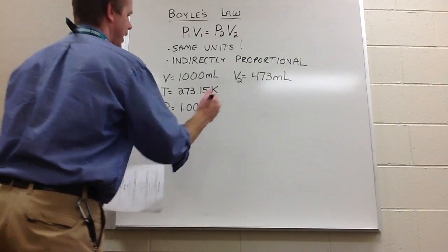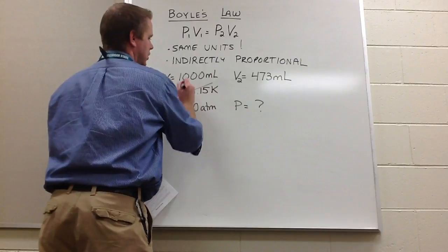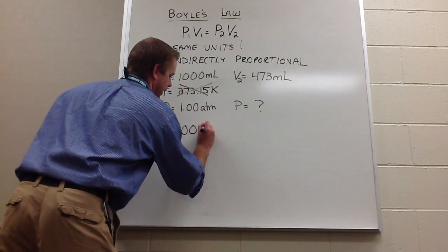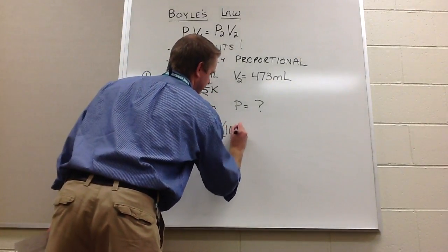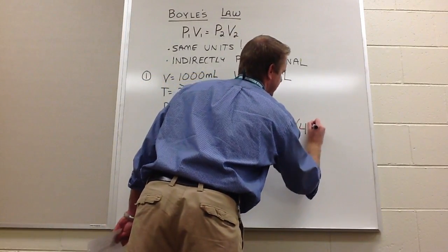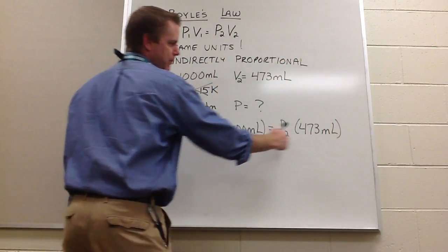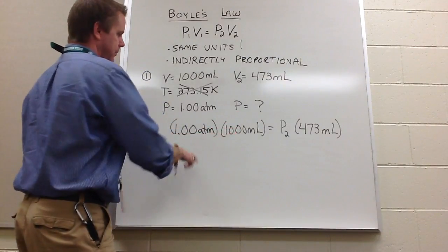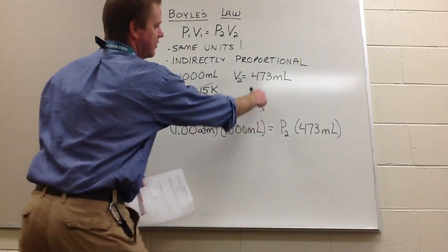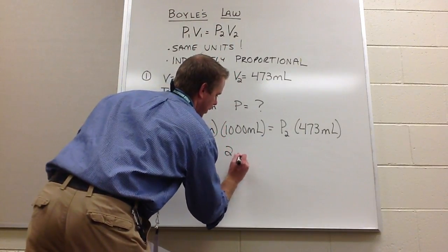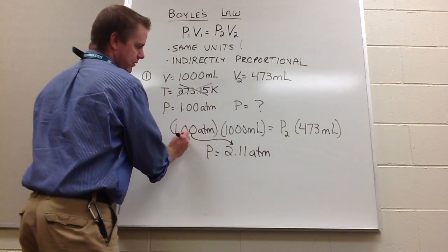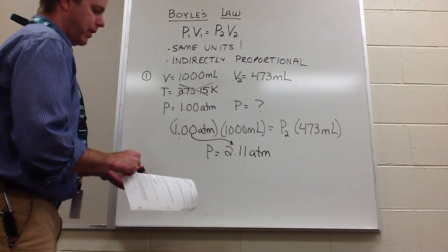Now link it all up. The temperature is what I'd call window dressing here. Set up your problem: 1.00 ATM times 1,000 milliliters equals P-final times 473 milliliters. We've essentially cut the volume roughly in half, so the pressure should double. Using three significant figures throughout, the answer is 2.11 ATMs. Does our answer make sense? From 1.00 to 2.11 — it does just about double. Therefore, our answer makes sense.